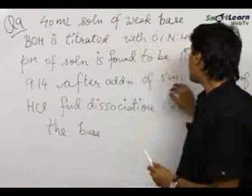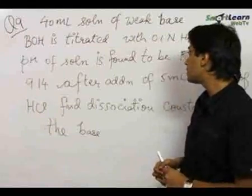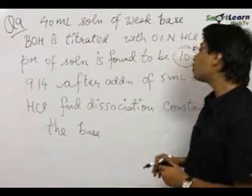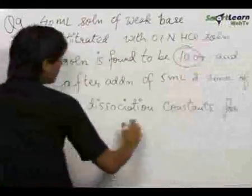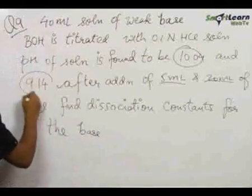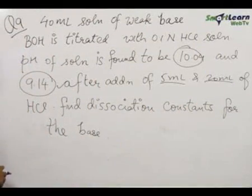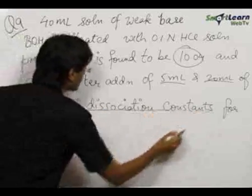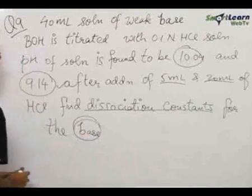First, when 5 ml of HCl has been added, the pH is 10.04 and when 20 ml of HCl is added, the pH comes out to be equal to 9.14. We need to find the dissociation constant for the weak base.